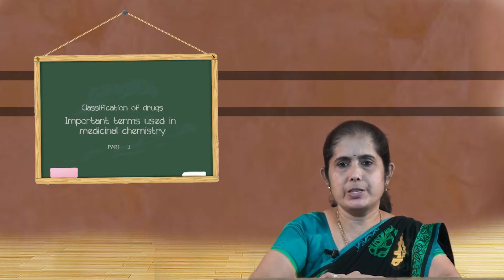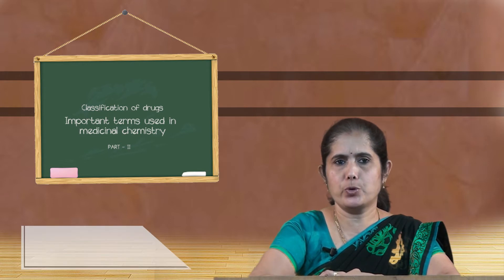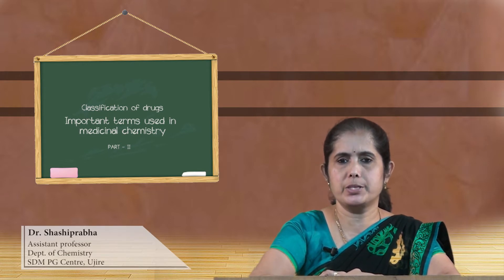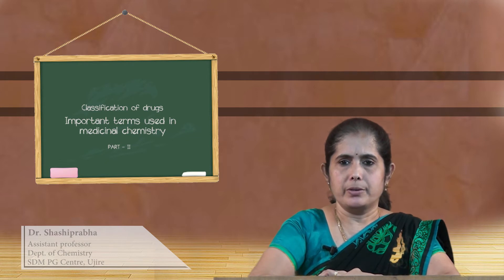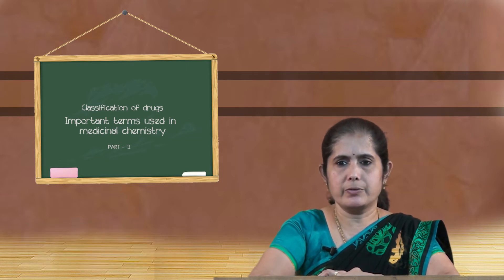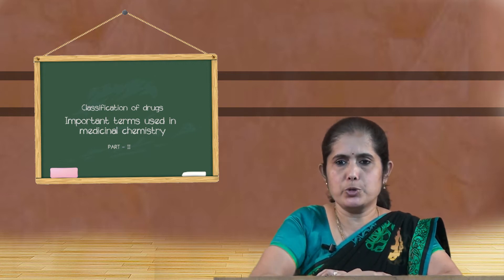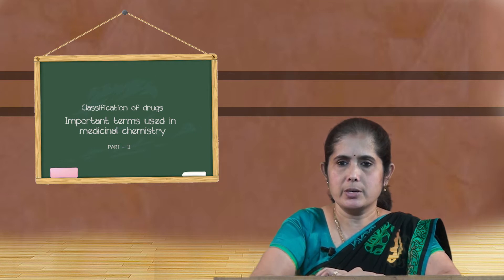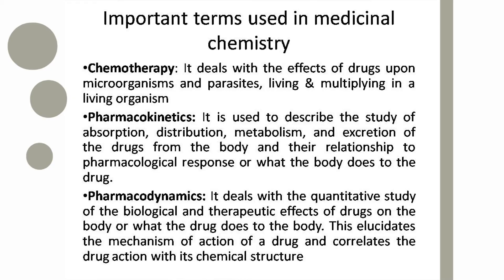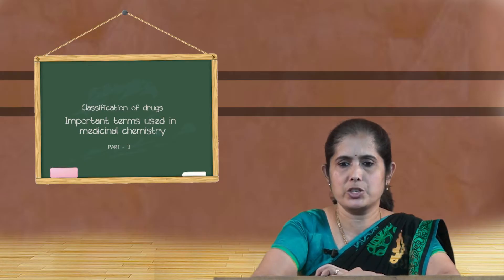Dear students, today we will discuss about few important terms used in medicinal chemistry. Chemotherapy — we have seen in our previous class when we were discussing about the classification of drugs, we came to know about chemotherapy drugs. So what does chemotherapy mean? Chemotherapy deals with the effects of drugs upon the microorganisms and parasites living and multiplying in a living organism. This is the science which deals with infectious diseases.